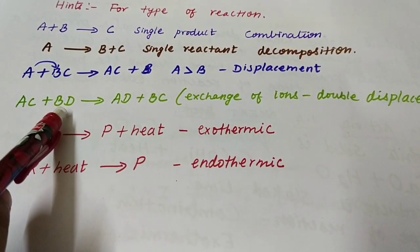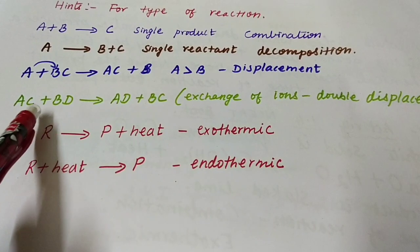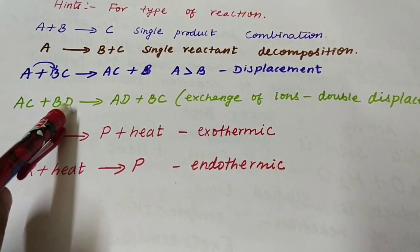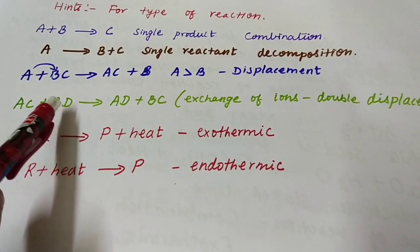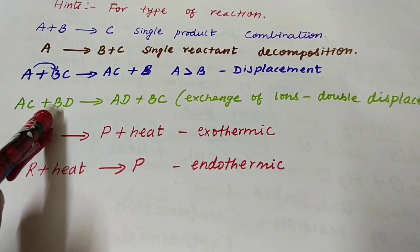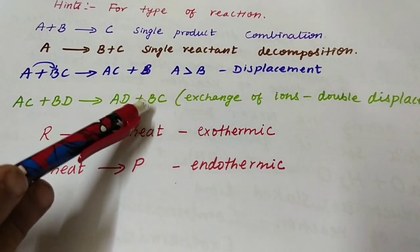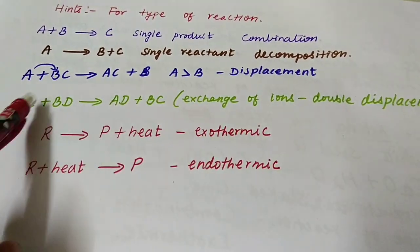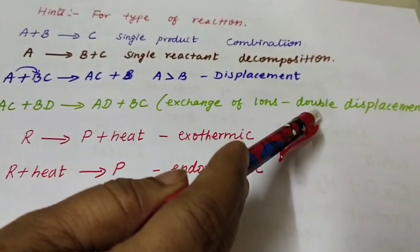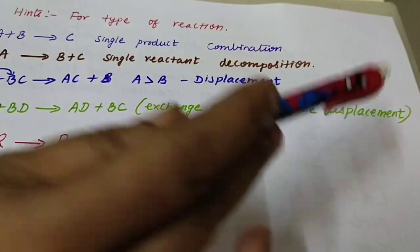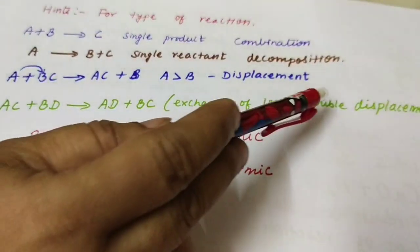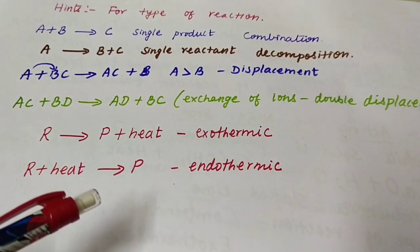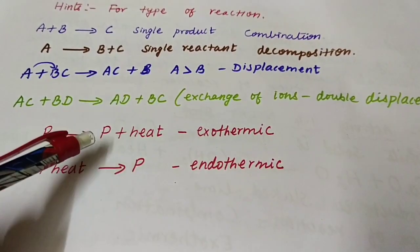If both reactants are compounds — AC + BD — they exchange their partners: A exchanges with D to form AD, and B exchanges with C to form BC. When there is an exchange of ions or exchange of partners, it is a double displacement reaction. Most double displacement reactions are also precipitation reactions.